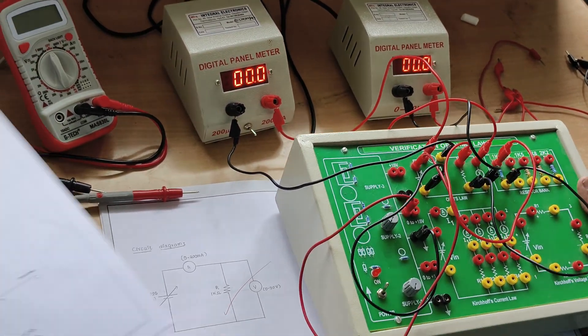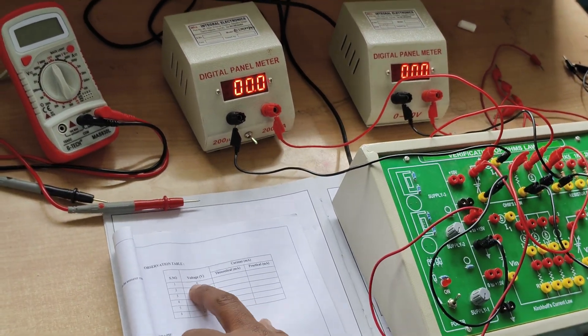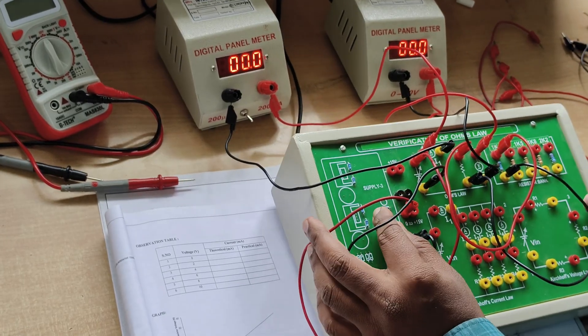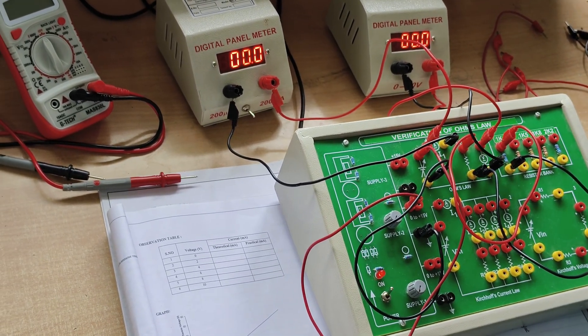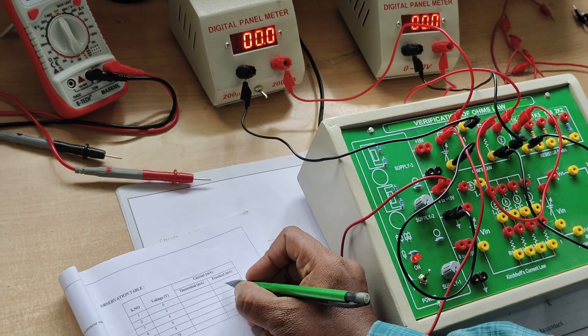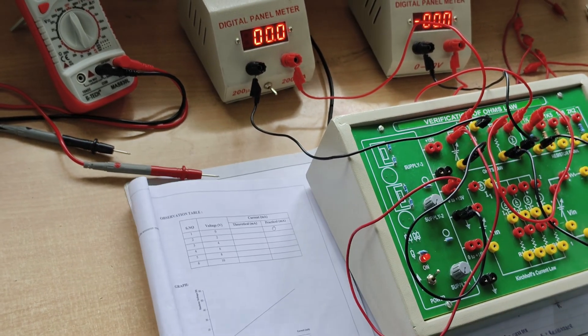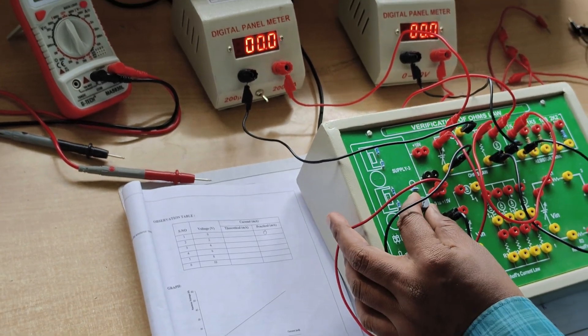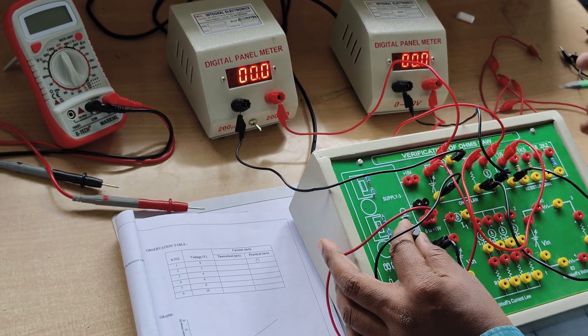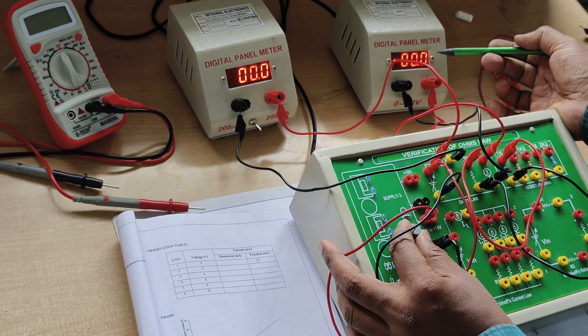Next, we gradually increase the voltage while watching the voltmeter and apply up to 2 volts.